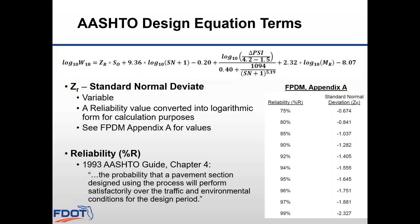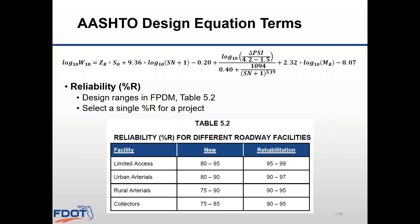The standard normal deviate is the logarithmic form of the reliability value. Reliability is the probability that a pavement section designed using the design equation will perform satisfactorily over the traffic and environmental conditions for the design period. Selecting higher reliability values will result in thicker pavements. You can find our design range values for reliability in Chapter 5 of the flexible manual, specifically in Table 5.2. These ranges are based on facility type and project type, and for a single project you should only select one reliability value.